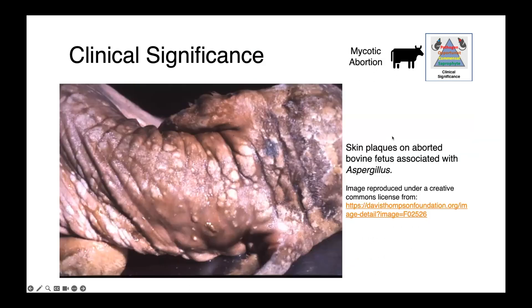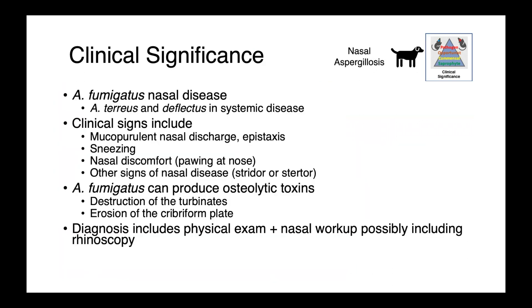In this image here, you can see a close-up of an aborted fetus with these round fungal plaques all over the skin — these ringworm-like lesions. In dogs, we can see several types of infections associated with Aspergillus.